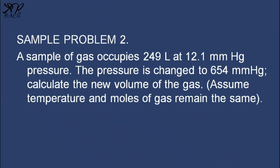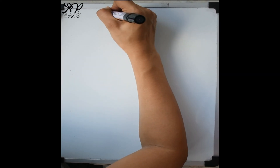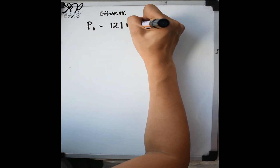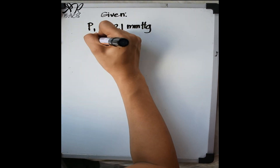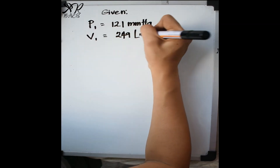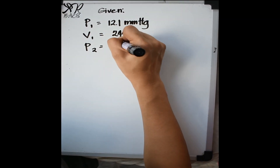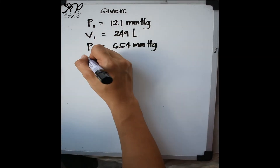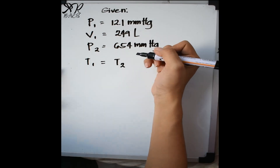Sample problem number 2: A sample of gas occupies 249 liters at 12.1 millimeters of mercury pressure. The pressure is changed to 654 millimeters of mercury. Calculate the new volume of the gas. Assume the temperature and moles of gas remain the same. The given values are: initial pressure of 12.1 mmHg, initial volume of 249 liters, and final pressure of 654 mmHg. Since temperature remains constant, it cancels out.